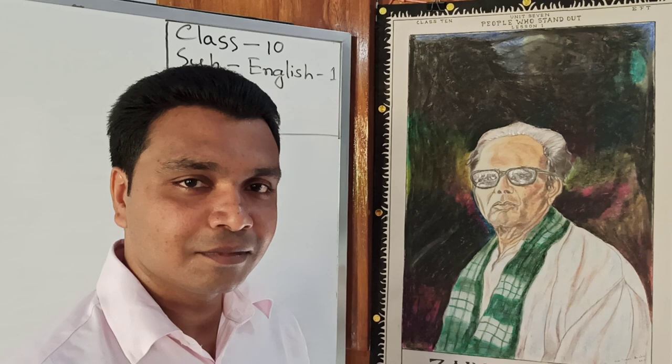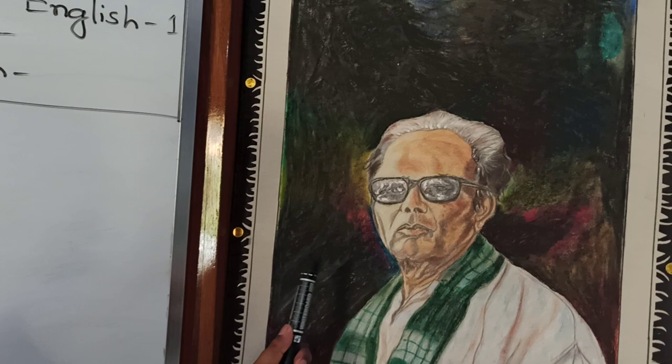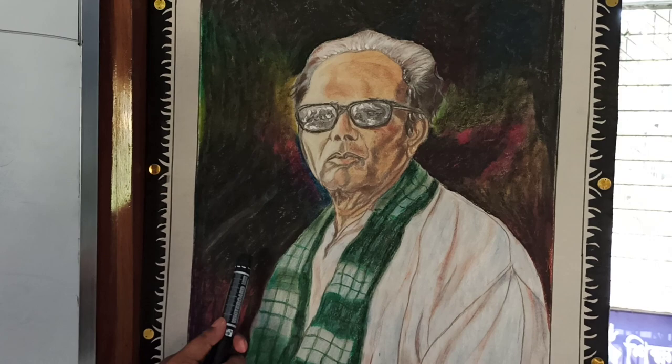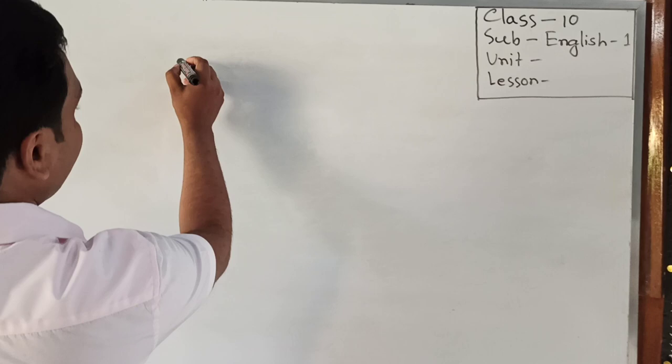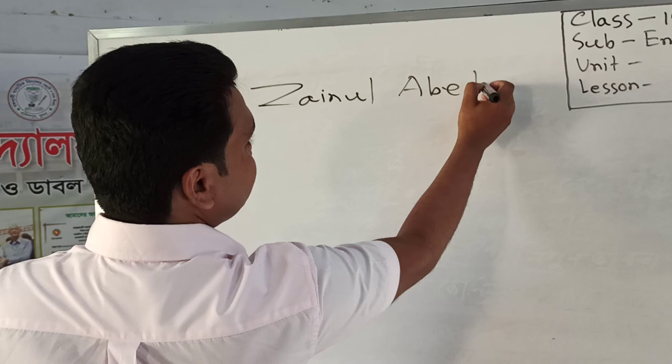Dear student, look at the picture. This is the man. He is one of the greatest men in painting and art. You can see the name — Zainul Abedin. Yes, dear student, he is Zainul Abedin, and our today's lesson is about Zainul Abedin, the great artist.